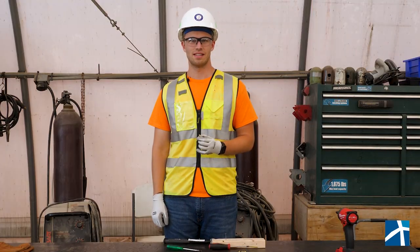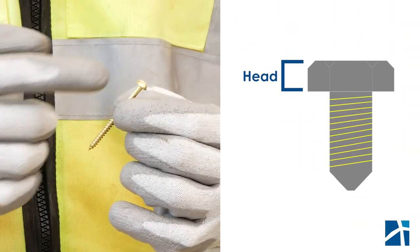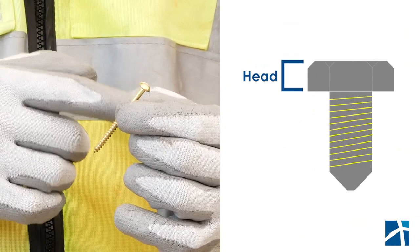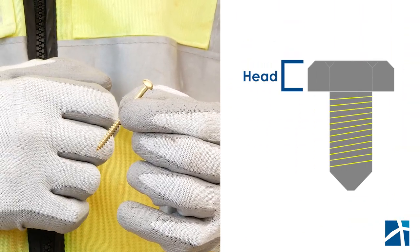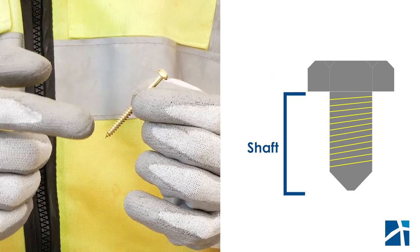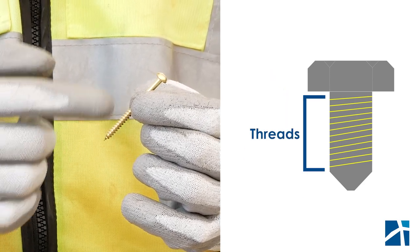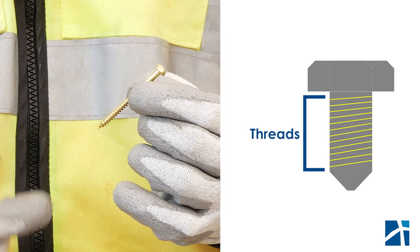A screw consists of three main parts: the head, which provides a surface for the screwdriver to grip and turn the screw; the shaft, a long cylindrical rod; and the threads, which are the spiraling ridges along the shaft.